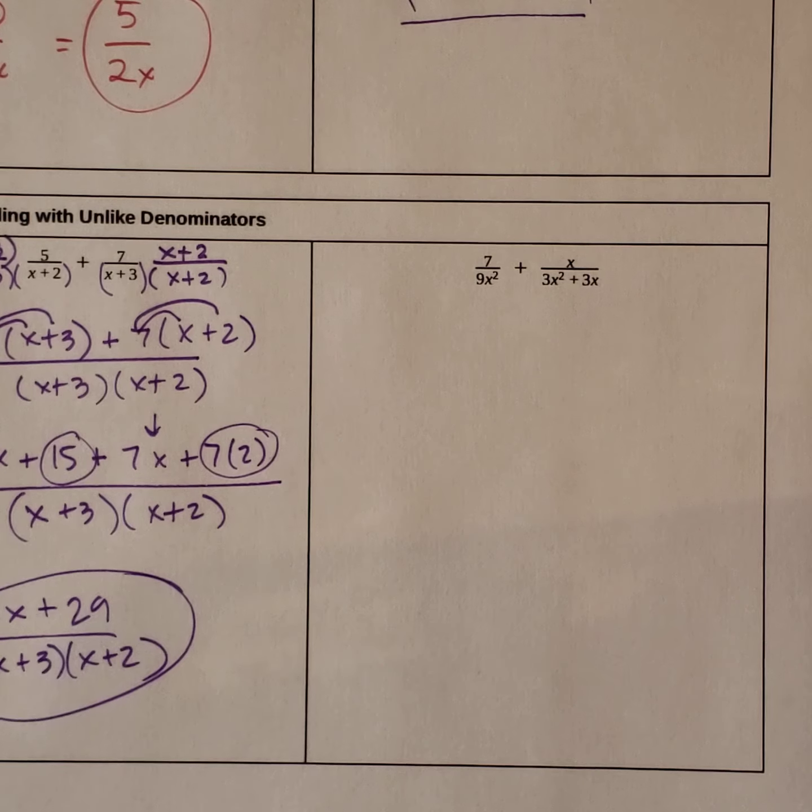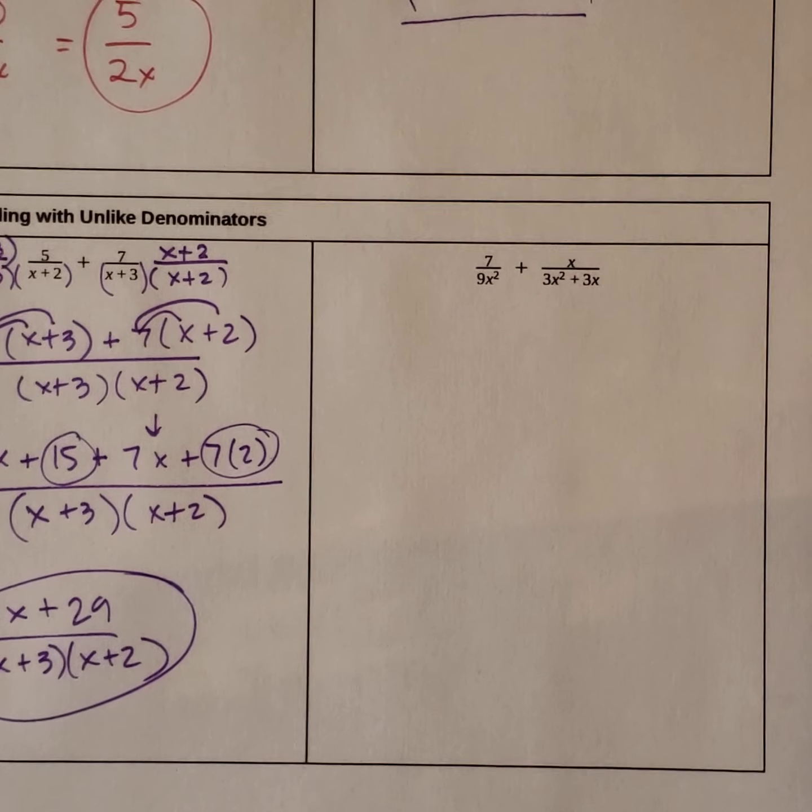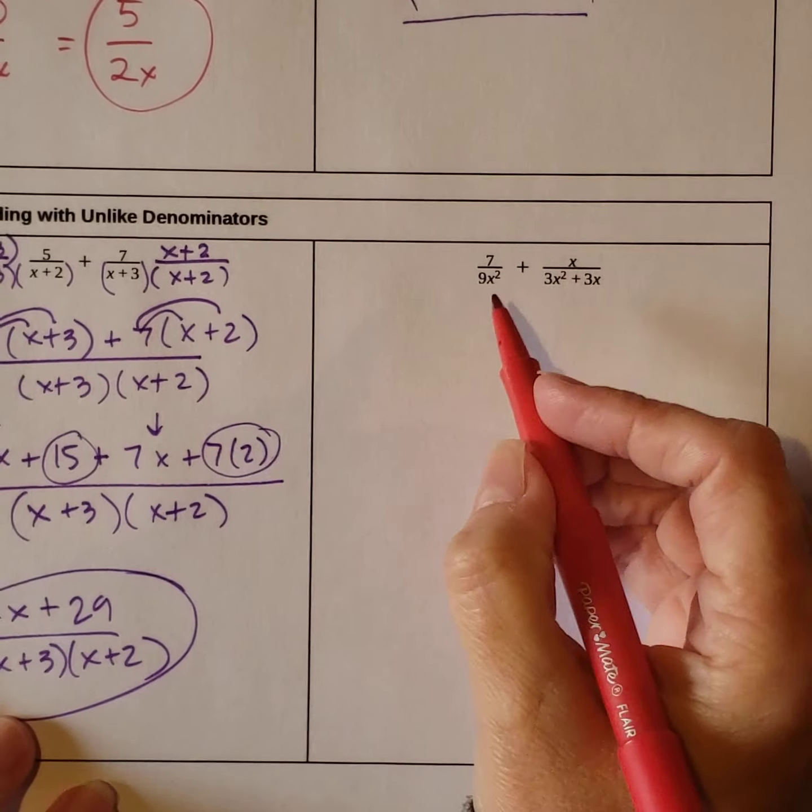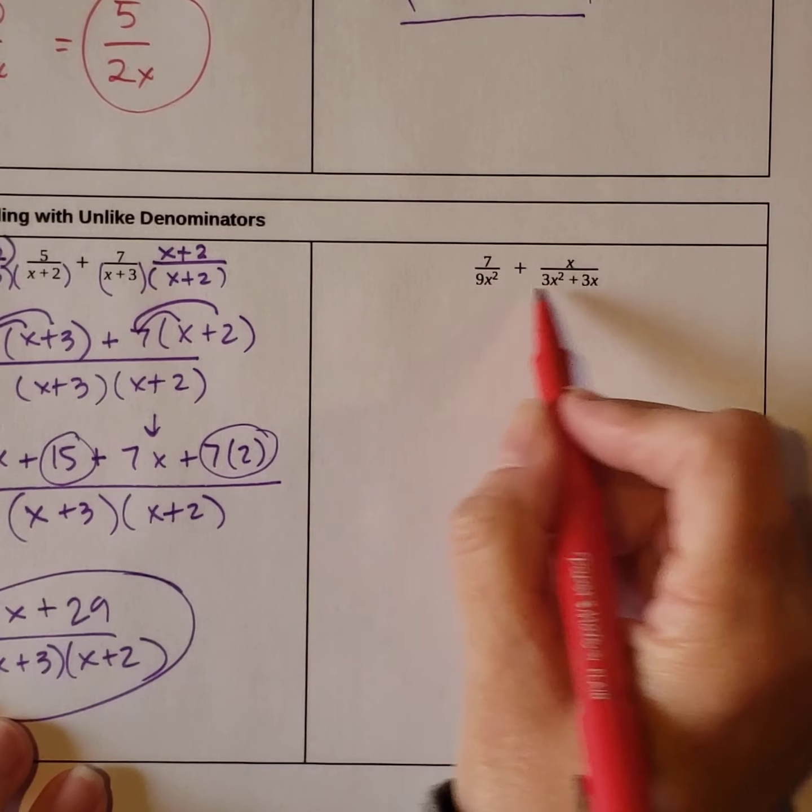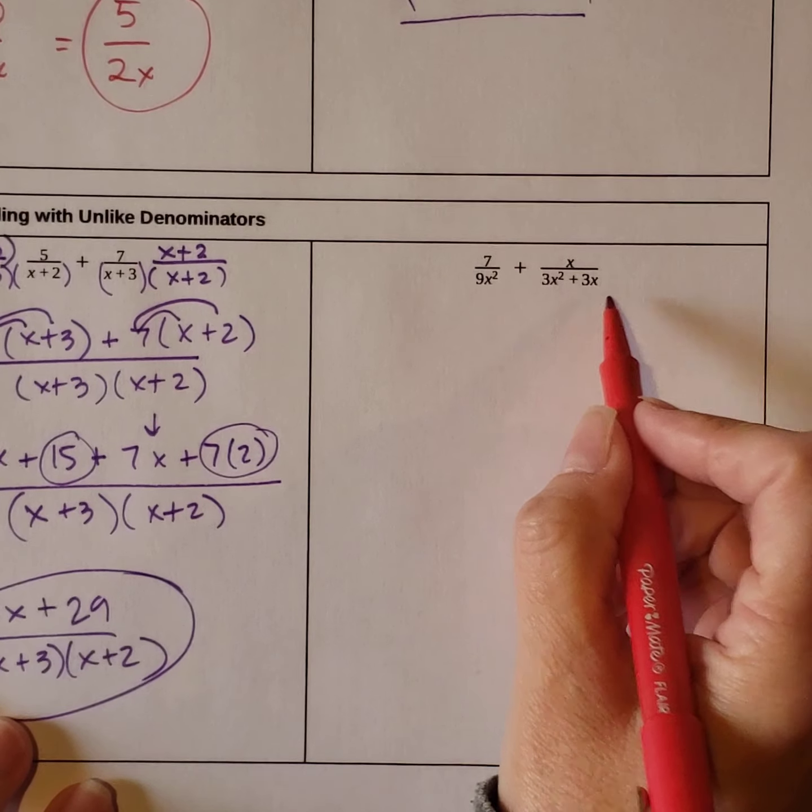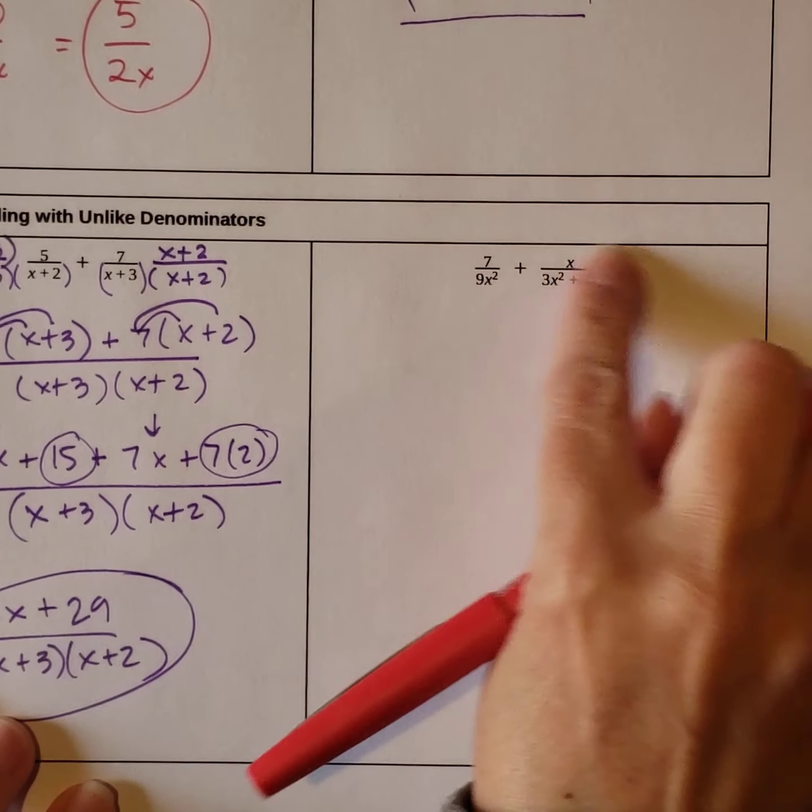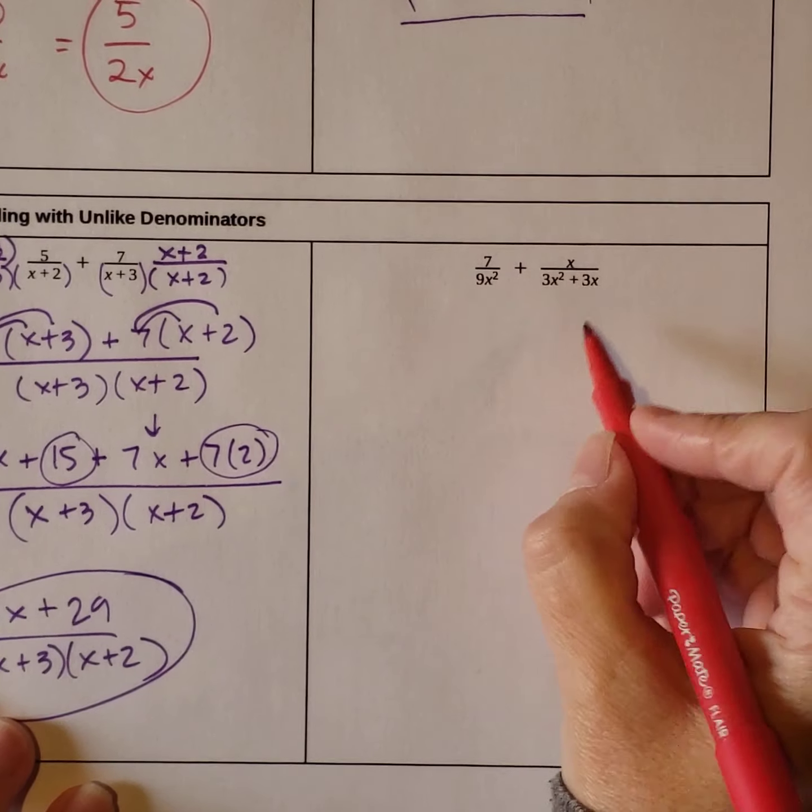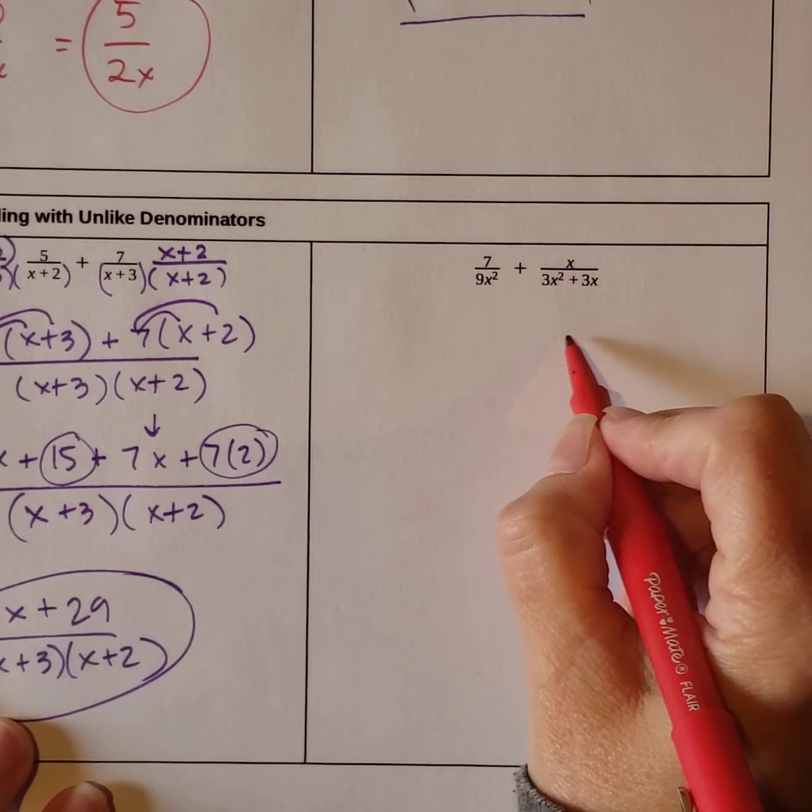So our first goal is to find a common denominator. Let's look at what's in our denominators. We have 9x squared, we have 3x squared plus 3x. We can pull something out of this to see what we have.